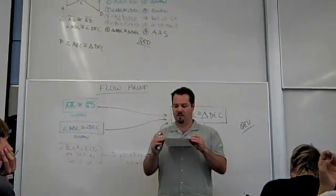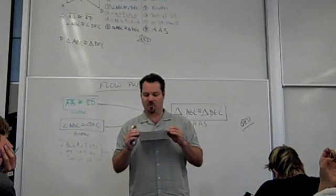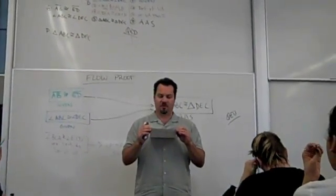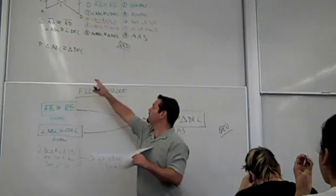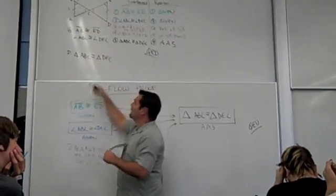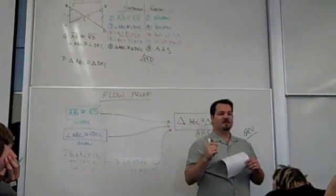Did anyone try to do level 12 where you're given an angle congruent, another angle congruent, side congruent, but instead of saying you're trying to prove that triangles are congruent, you're asked to prove that a segment is congruent.